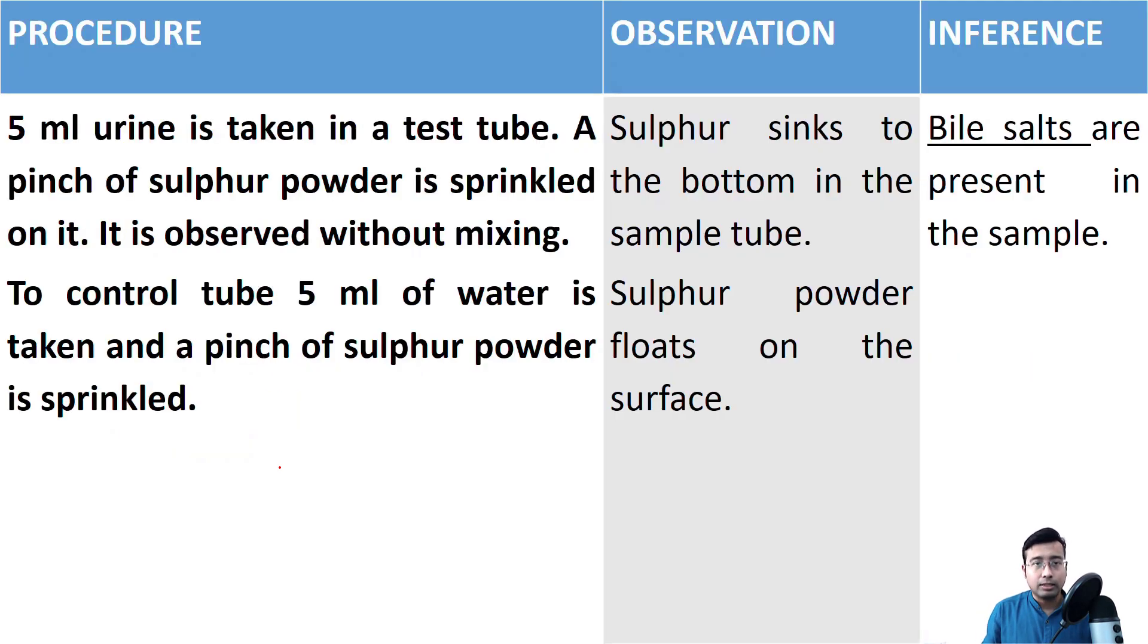Let's look at the procedure. In procedure, what we need to do is we need to take two test tubes. In the first tube, we should label it as S, that stands for sample. And the second test tube, we should label as C, that stands for control. So in the sample test tube, we should take five milliliter of urine.